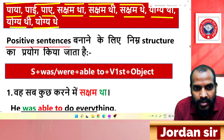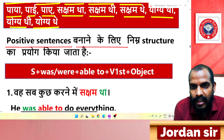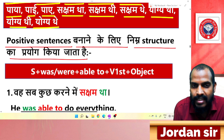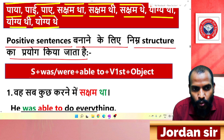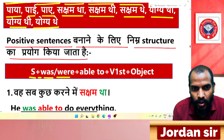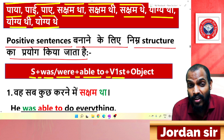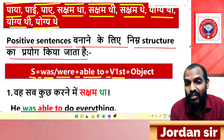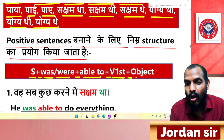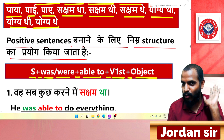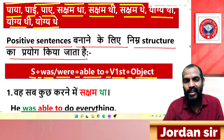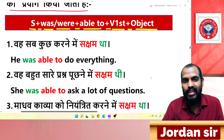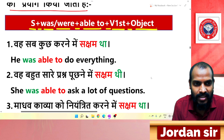Now let's practice some sentences so you understand how 'able to' is used in conversation. For positive sentences, the structure is: Subject + was/were + able to + verb (first form) + object. There should be no doubt about this structure.